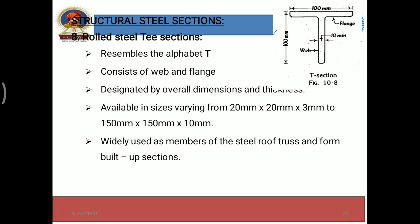T sections are designated by their overall dimensions — that means overall height or length — and their thickness. In this diagram, you can see the overall height of this T section is 100 mm, with a web thickness of 10 mm and flange thickness of 10 mm. These are available in sizes from 20 mm x 20 mm x 3 mm up to 150 mm x 150 mm x 10 mm.